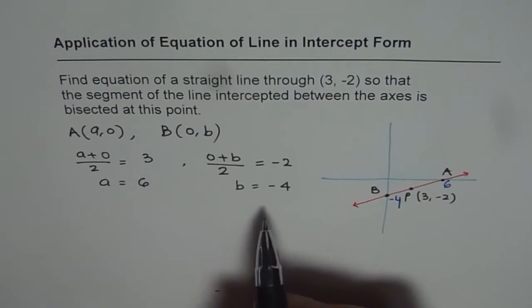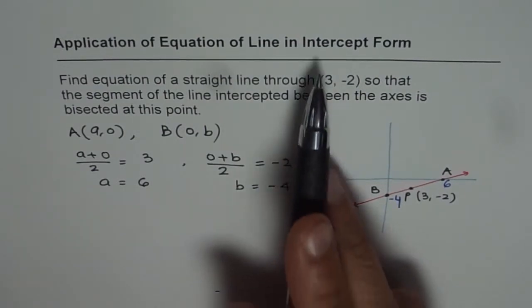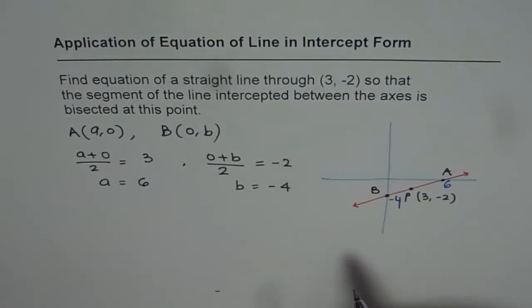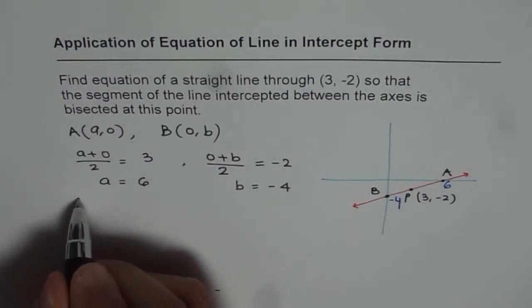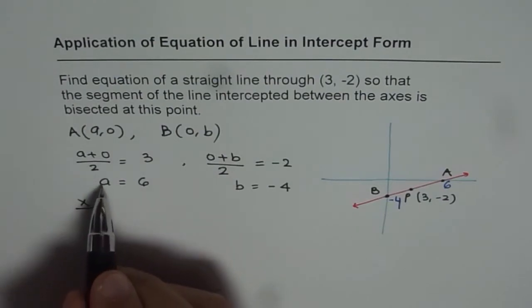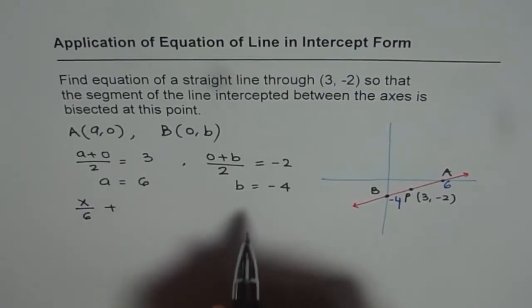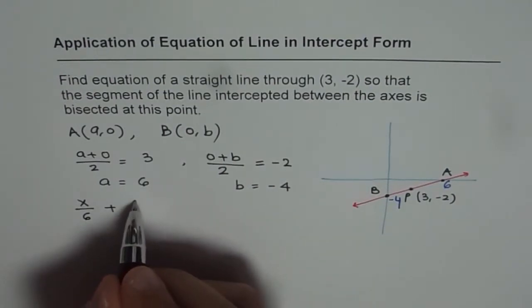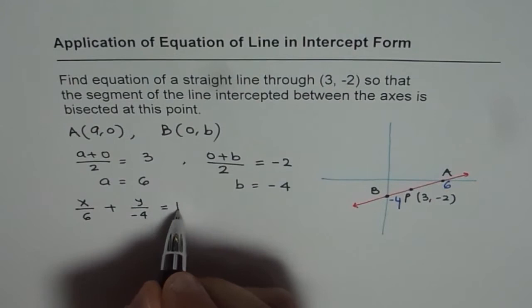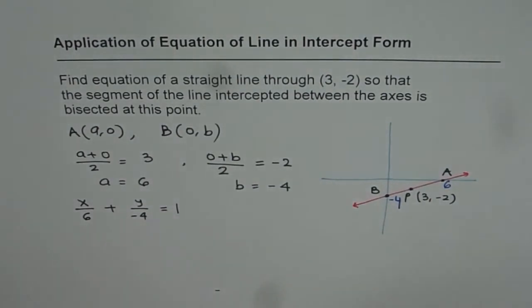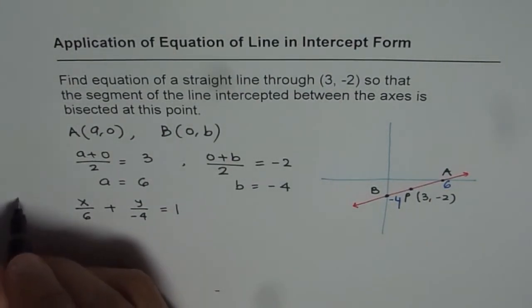Now one way is to use equation in intercept forms. And that equation, if you remember, is x over A, which is the x-intercept, which is 6, plus y over B, which is y over -4, equals to 1. So that is using intercept forms. What I applied here is intercept form.